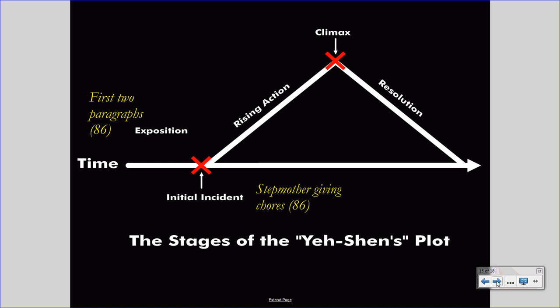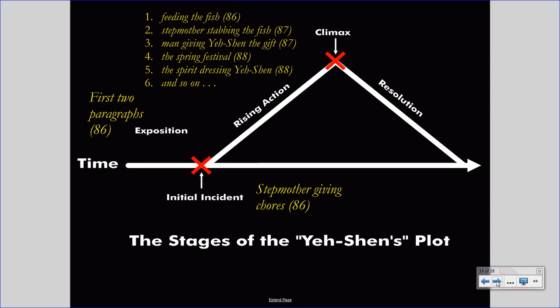After this initial incident, the rising action can occur, and during the rising action, a number of events happen, only some of which are depicted here. First, Yeh-Shen feeds her fish, trying to make herself happy by caring for the animal. The stepmother, wishing to end that happiness, stabs the fish. After that, a man gives Yeh-Shen a gift, again trying to restore her happiness, which then moves to the spring festival, which the stepmother prevents Yeh-Shen from attending. The spirits, however, try to counter the stepmother by dressing Yeh-Shen and sending her to the festival. And so on, and so on. The stepmother trying to repress Yeh-Shen's happiness, Yeh-Shen trying to be happy. All of these events rise and rise until we reach the climax, where the king marries Yeh-Shen.